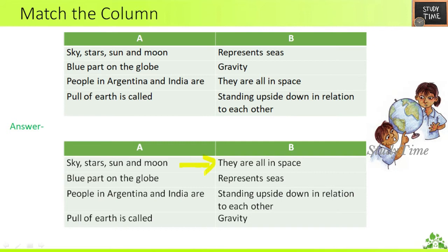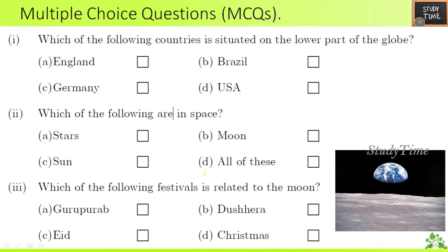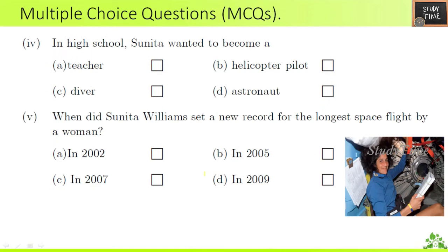Multiple choice questions: First question — which of the following countries is situated on the lower part of the globe? The answer is Germany. Second question — which of the following are in space? All of the above — stars, moons, and all these are in space. Third question — which of the following festivals is related to the moon? Guru Purnima. In high school, Sunita wanted to become a teacher.